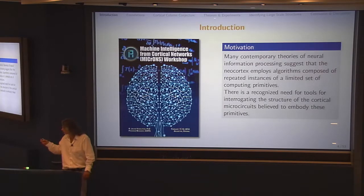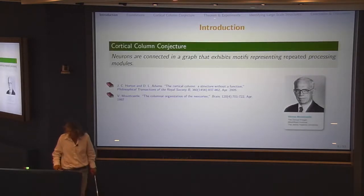So the idea is that if I had 10 to the sixth neurons in a cubic millimeter of mammalian cortex, that might be partitioned into 10 to the fourth small subgraphs, 100 vertices each. So there's 10 to the fourth computing primitives, but there's only a few that are different than one another. They really only come in three or four or 10, much fewer than 10 to the fourth. And so the goal is to understand the structure of the cortical microcircuits believed to embody these primitives.